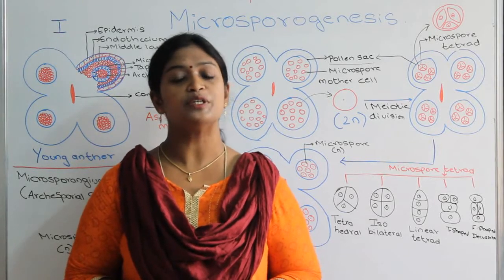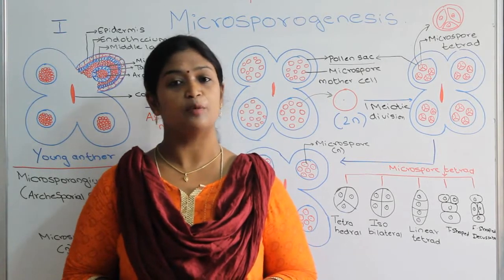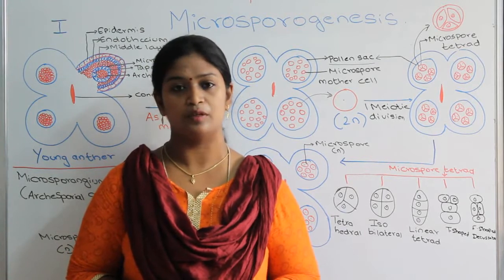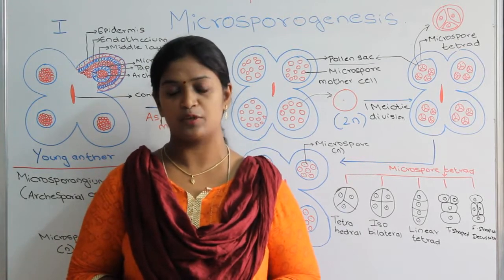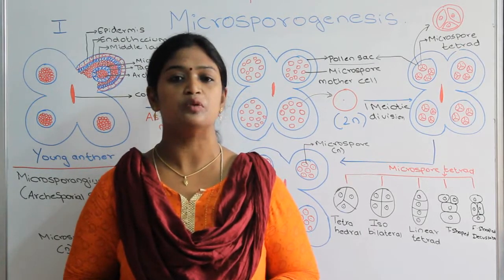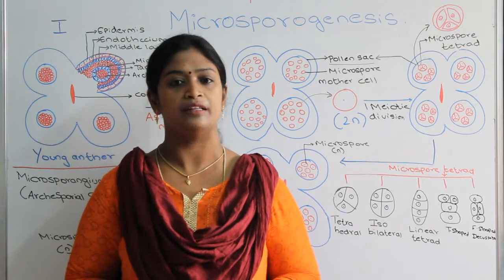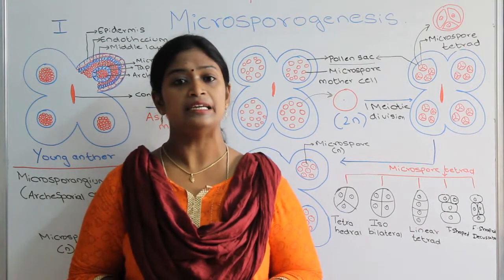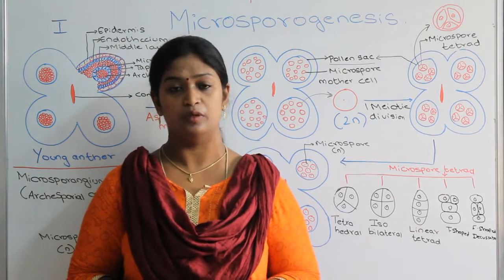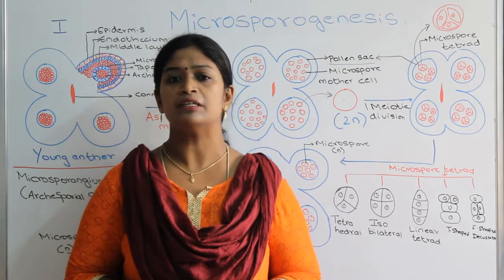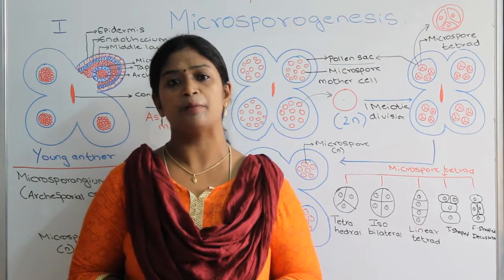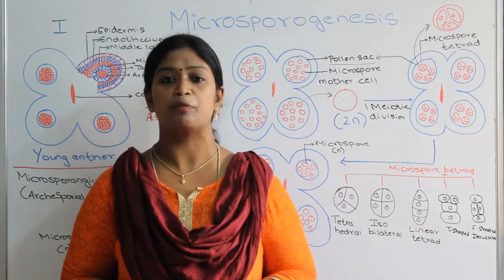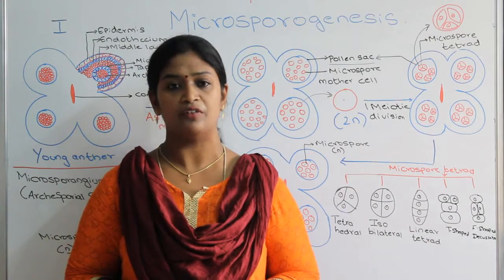Hello everyone. In our previous videos we have studied about the floral whorls. We have the outer accessory whorls, that is the calyx and the corolla, and the inner essential whorls are the stamen and the pistil.